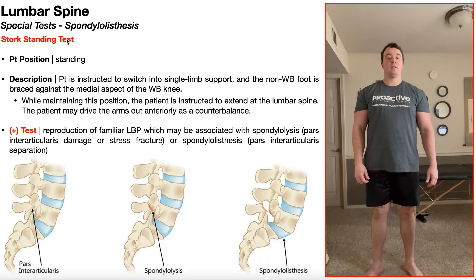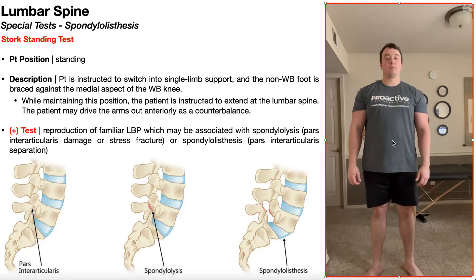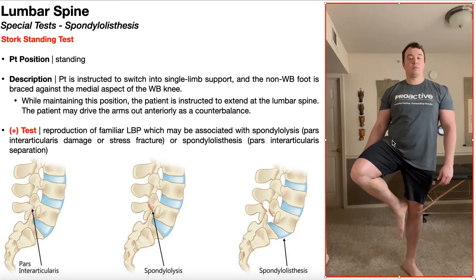To perform the stork standing test initially, the patient will be positioned in standing, as you see right here. The patient is then instructed to switch into single limb support, and the non-weight-bearing foot is braced against the medial aspect of the weight-bearing knee — so that will look something like this.